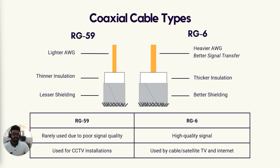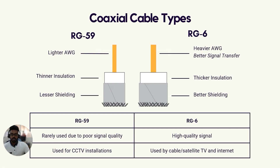RG6 coaxial cables are constructed with between one and four layers of shielding, and the internal wire is typically made of solid copper. RG6 cables have much lower signal loss over long distances than RG59, resulting in higher quality signal. This is why RG59 is quickly becoming replaced by RG6. RG6 coaxial cables are used for cable television, satellite television, and cable modems.